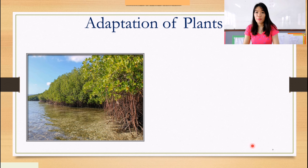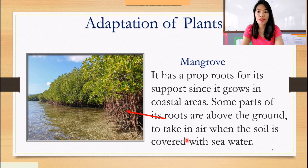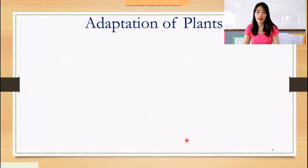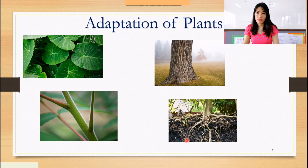The next plant is mangrove trees. Last time I discussed the mangrove forest as one of the habitats of animals. How do mangrove trees adapt to their environment? They have prop roots for support since they grow in coastal areas. Some parts of their roots are above the ground to take in air when the soil is covered with sea water. These are the roots of the mangrove trees.